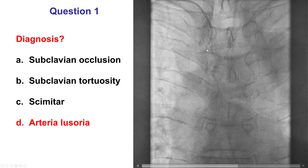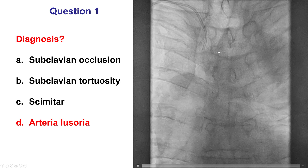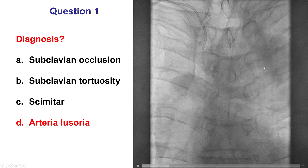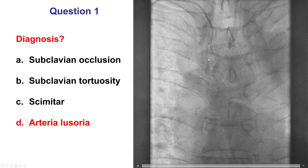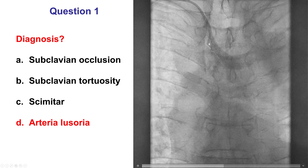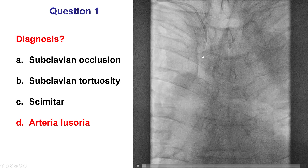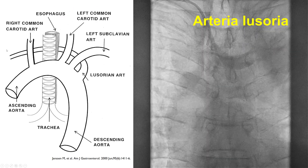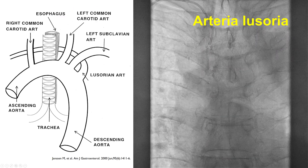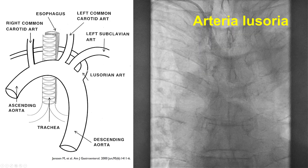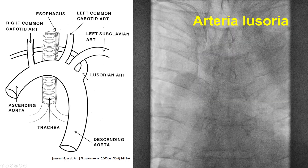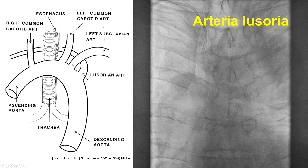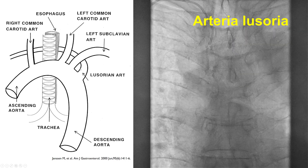We're seeing that there is a smooth border and the vessel continues towards the right instead of going straight down. If the subclavian was occluded, we would have seen a stump, and we don't really see any subclavian tortuosity. So this is an example of arteria lusoria, which essentially is an origin of the right subclavian artery — instead of coming from the brachiocephalic, it comes from the aortic arch, distal to the takeoff of the left subclavian artery.